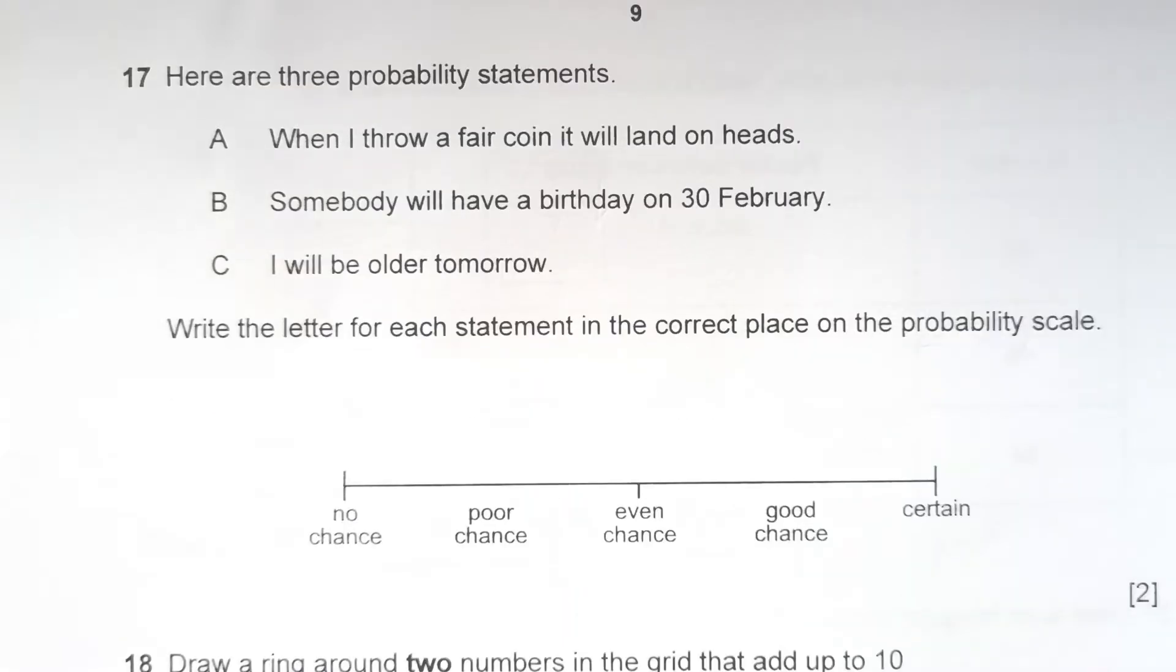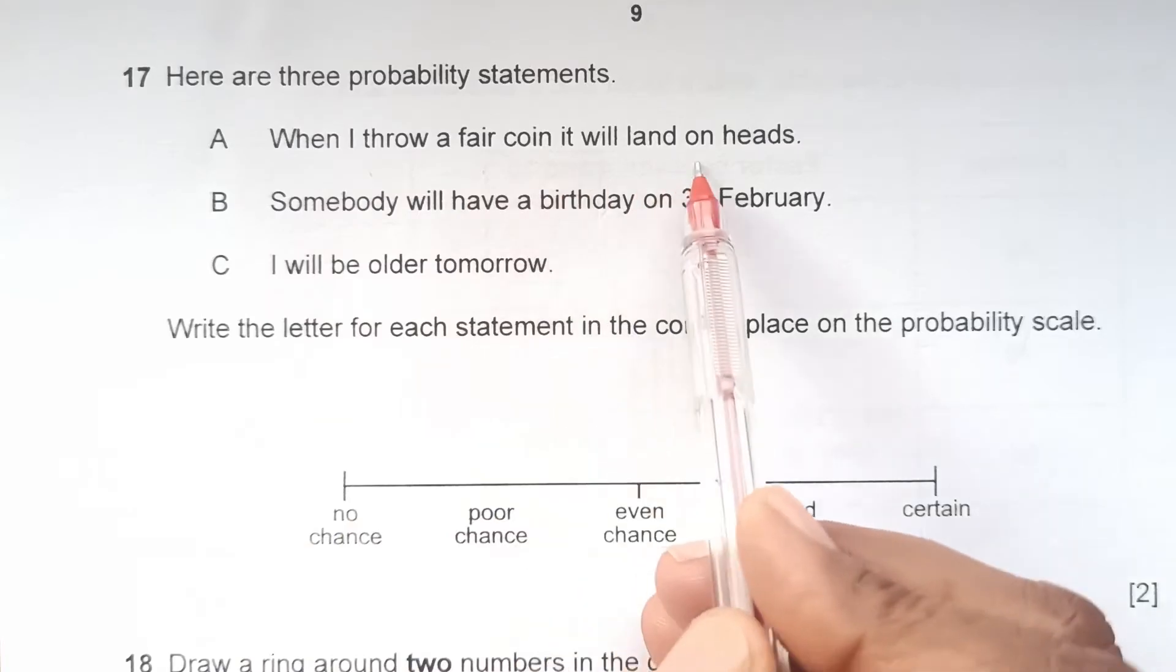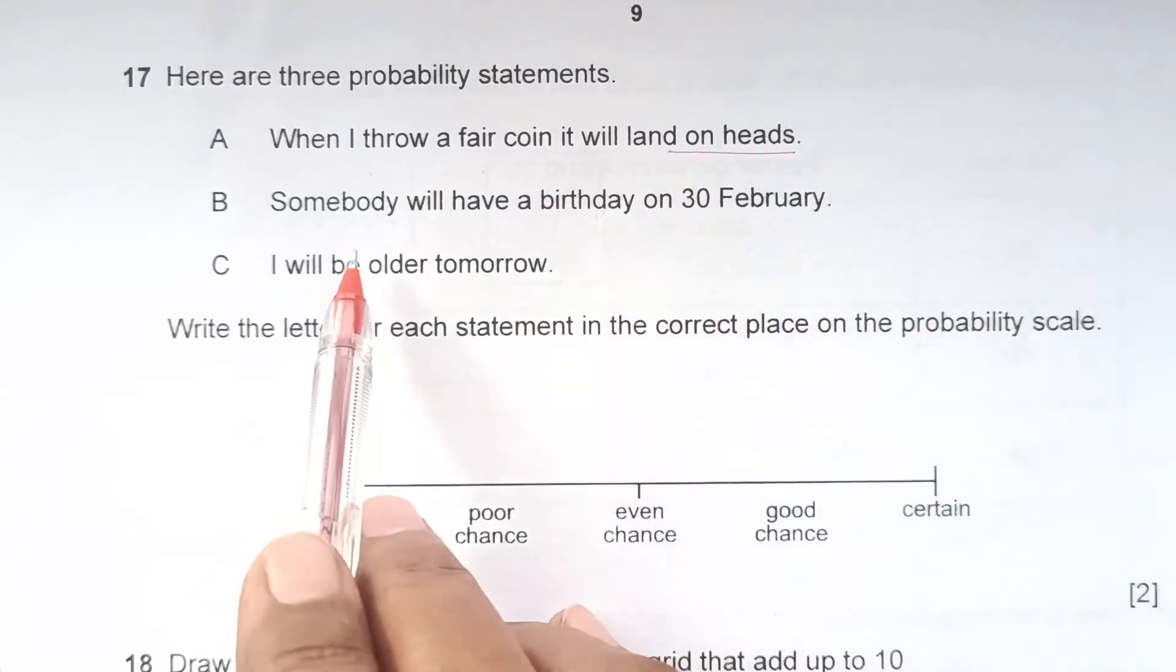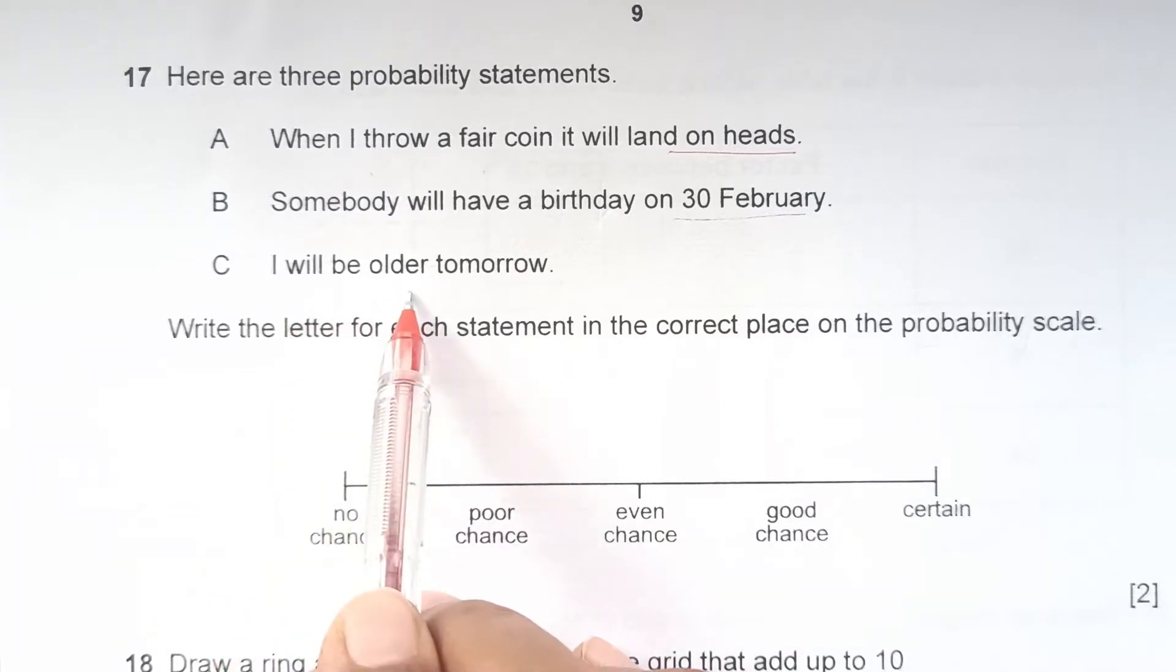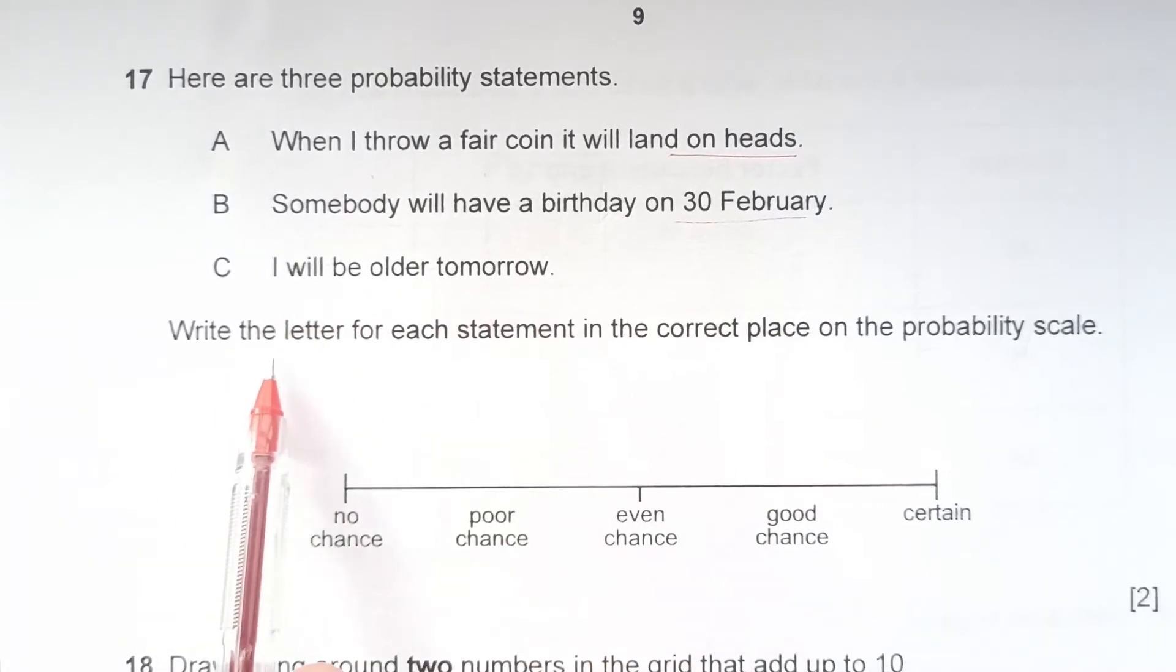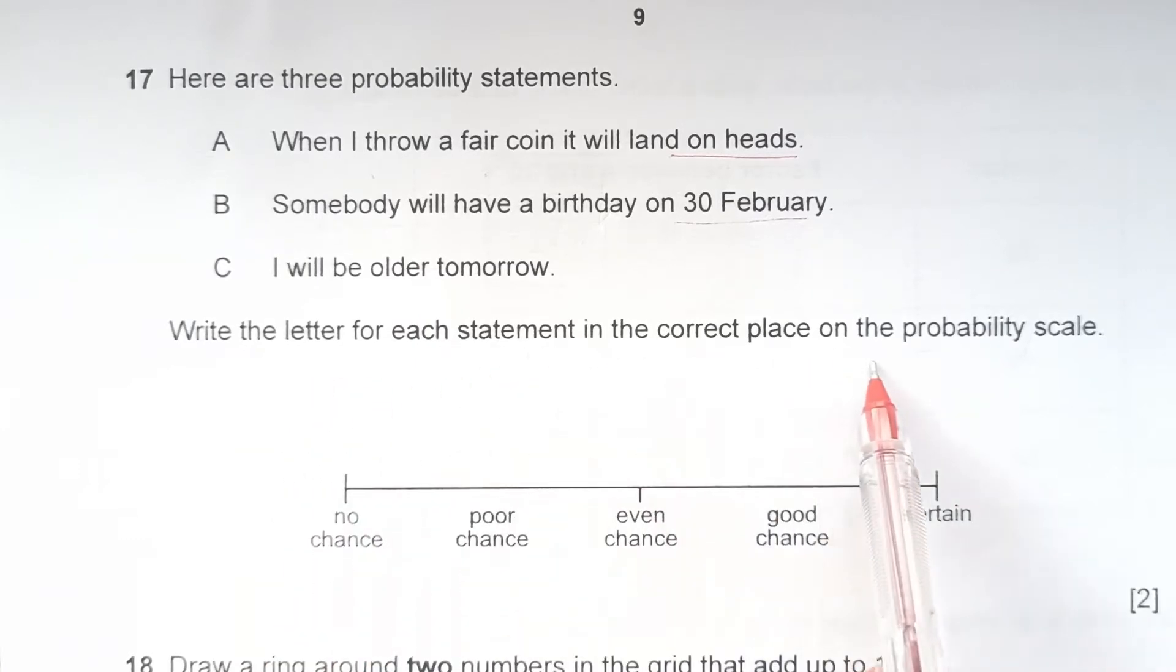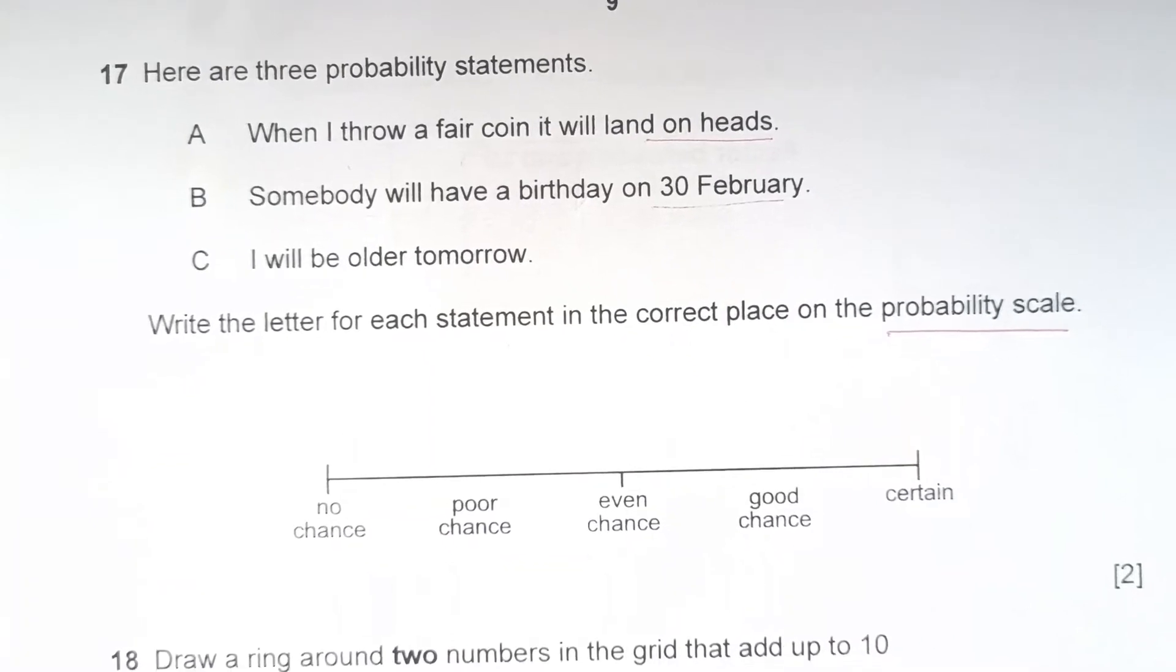Question 17. Here are 3 probability statements. Number A is when I throw a fair coin, it will land on heads. B: Somebody will have a birthday on 30th February. C: I will be older tomorrow. Write a letter for each statement in the correct place on the probability scale. This is the scale given to you with all the chances: no chance, even, poor chance, good chance, certain.